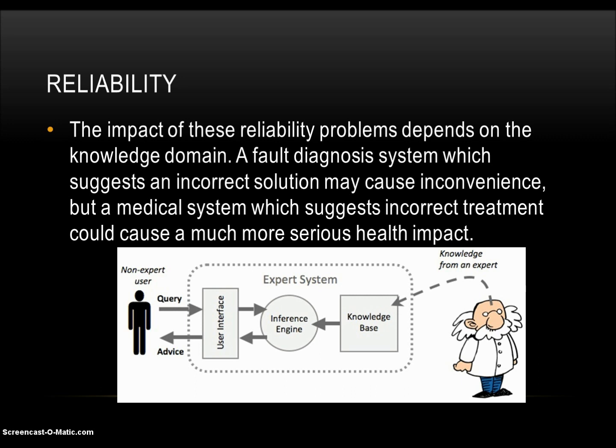Many modern AI researchers have moved away from developing expert systems and toward developing systems which can learn and improve. As shown in the diagram, the knowledge from the expert goes into the knowledge base, which transfers to the inference engine, which communicates with the user interface and allows the user to access the information. If something goes wrong along that chain — whether the knowledge from the expert is wrong, the knowledge base isn't programmed correctly, the inference engine isn't inferring correctly, or it's not accurately reaching the user interface — then you've got a reliability issue.